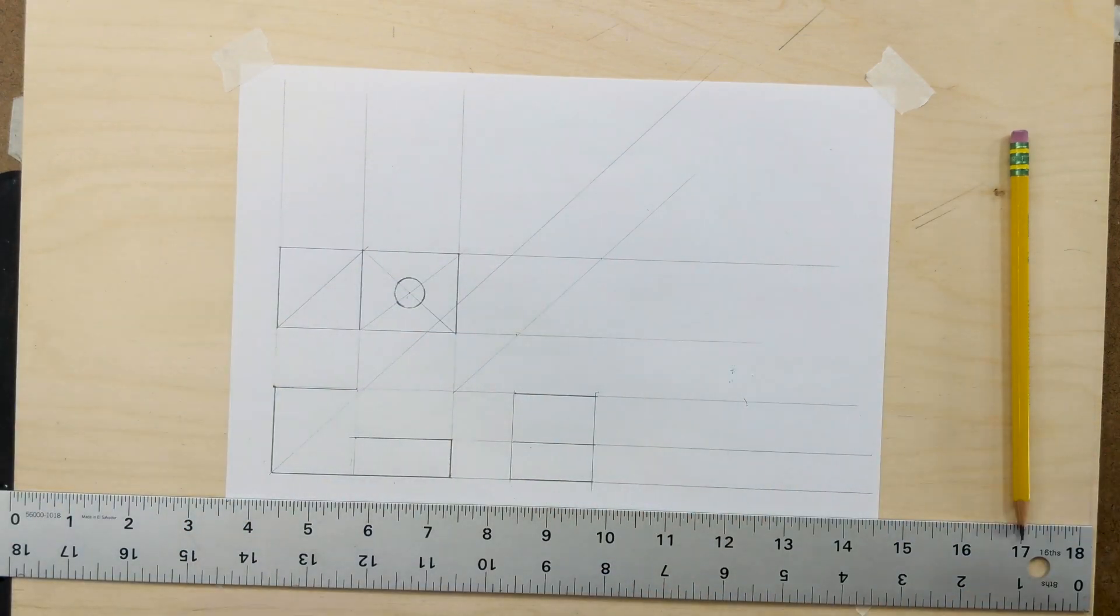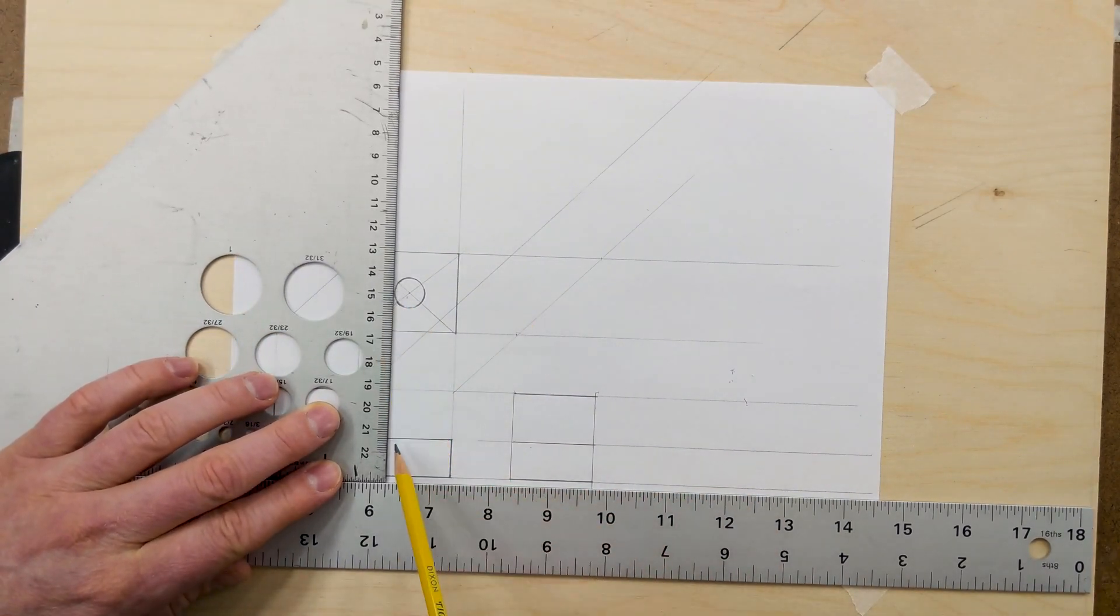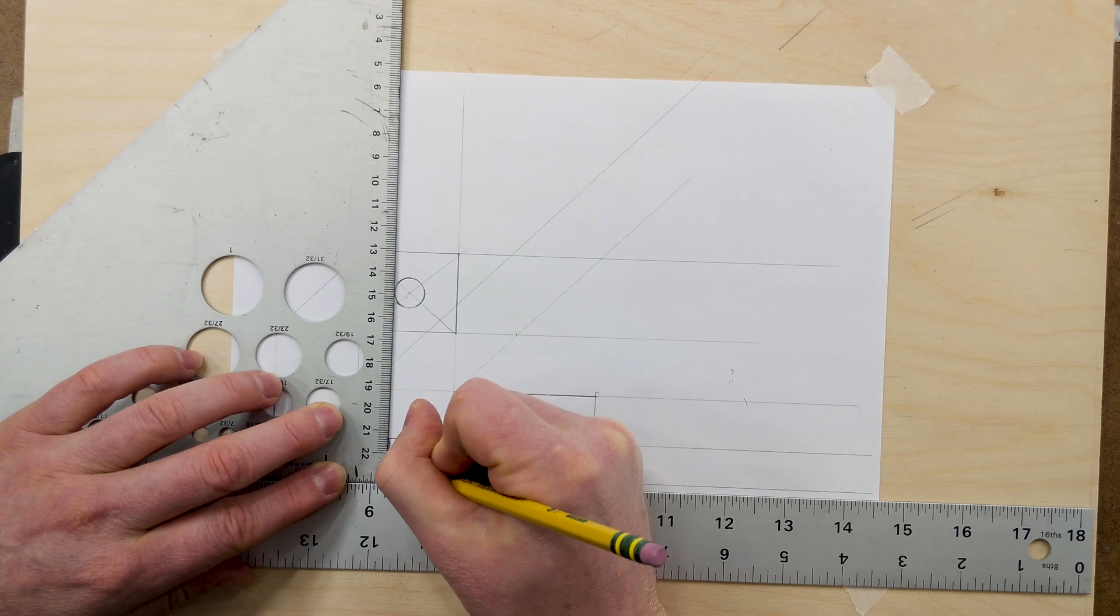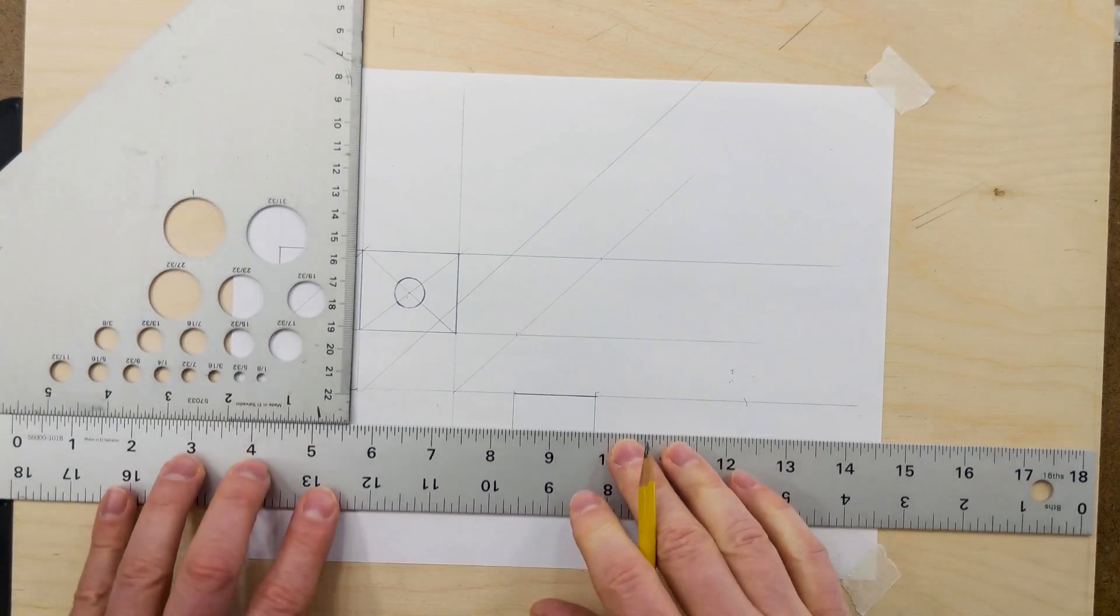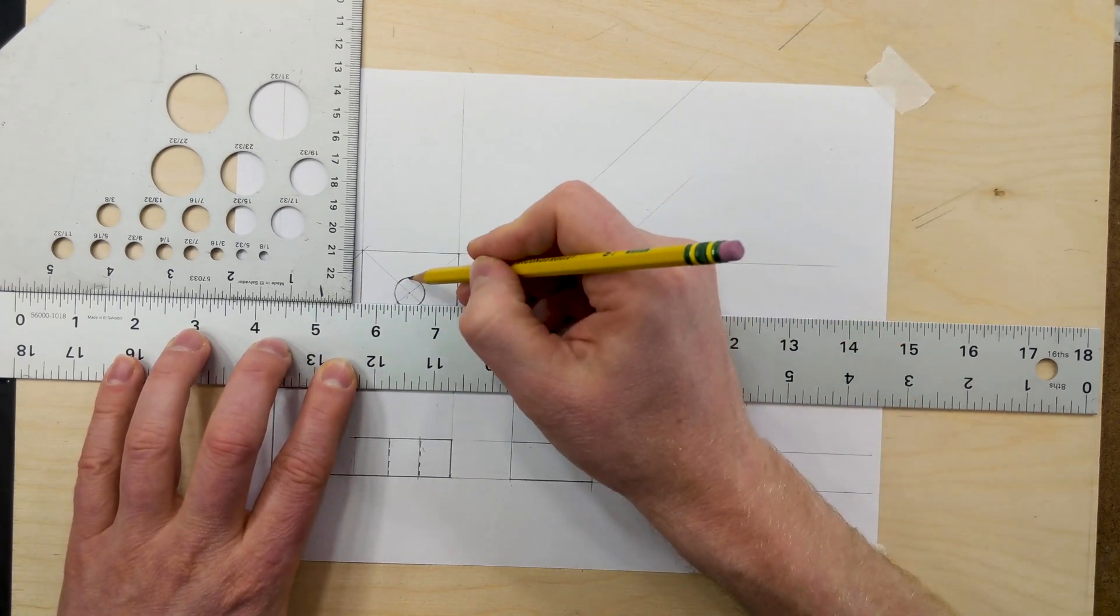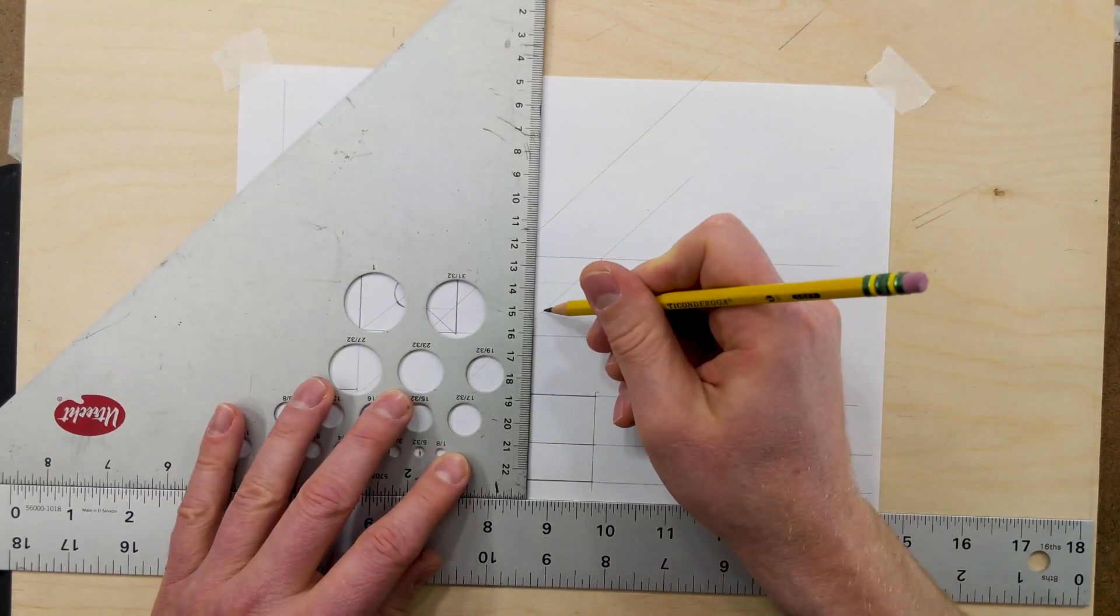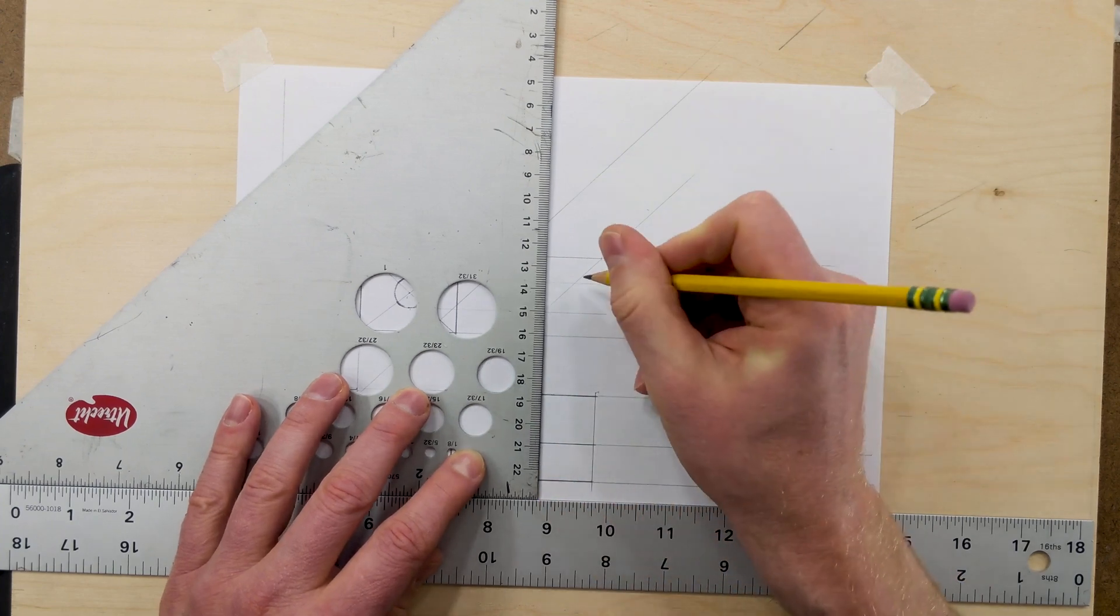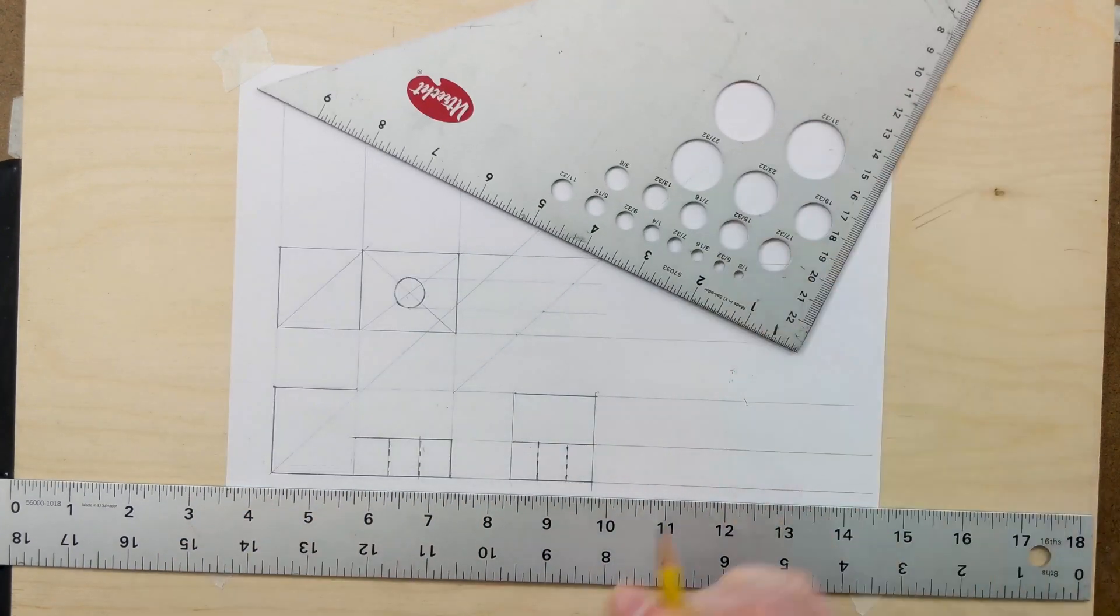Now we have our circle there, and we can project that straight down. And then we can mark our dotted lines. Then we can project it across as well. And that locates it on the other right hand side drawing. So now we have our hidden areas here.